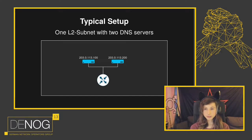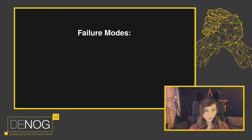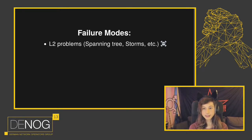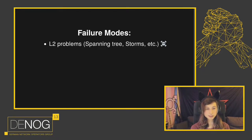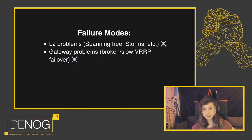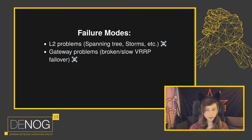So what can go wrong with these kinds of setups? As a network person, you probably think of network problems like spanning tree or broadcast storms — normal layer two problems that occur in legacy networks. This would be a catastrophic failure since both of your DNS resolvers would be down. Then there could be gateway problems — for example, a router breaking down, or even if you have two routers using layer two redundancy protocols, there could be a problem with the failover because the control plane is overloaded. This would also be a catastrophic failure.